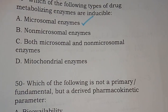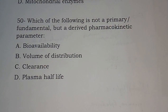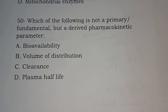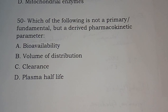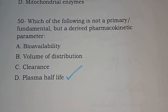Question 50, the last question of this video: Which of the following is not a primary fundamental but a derived pharmacokinetic parameter? Options: bioavailability, volume of distribution, clearance, plasma half-life. The correct answer is plasma half-life.